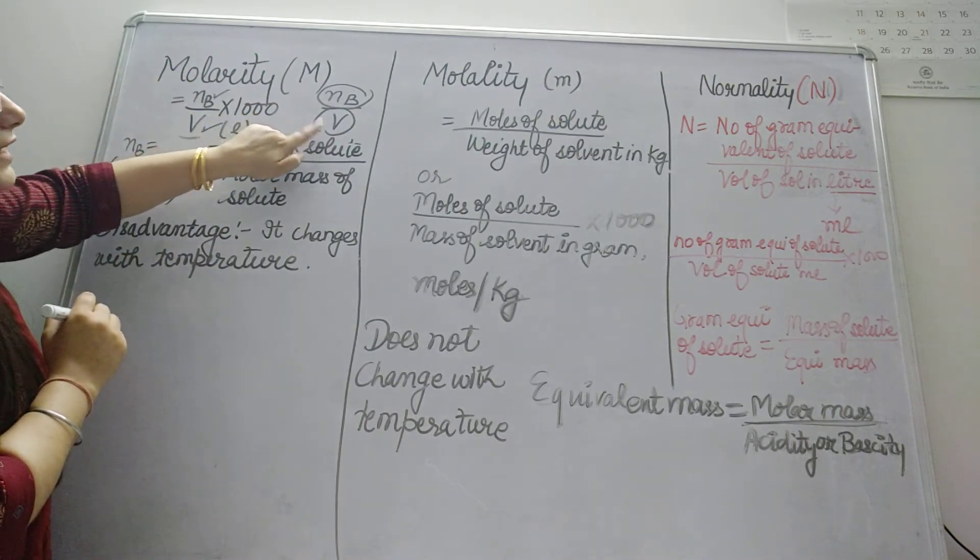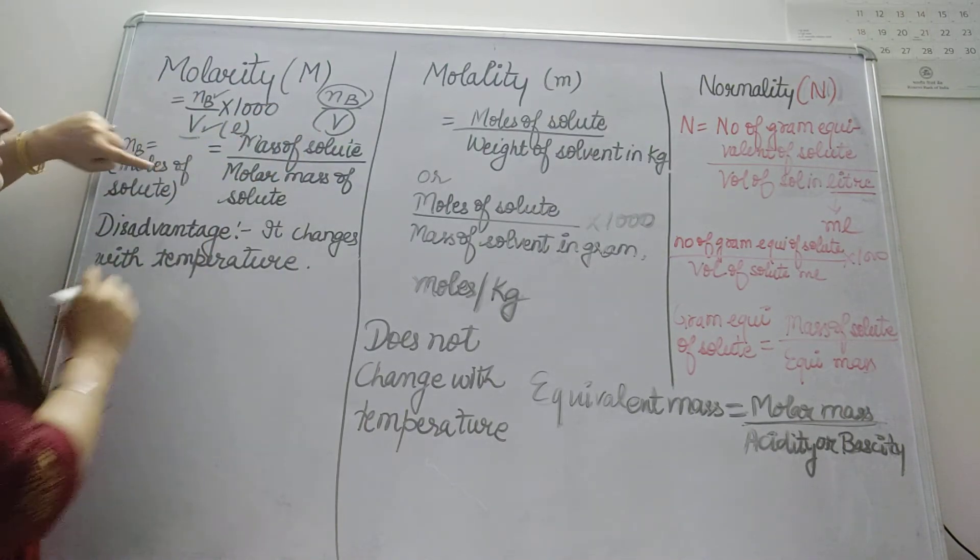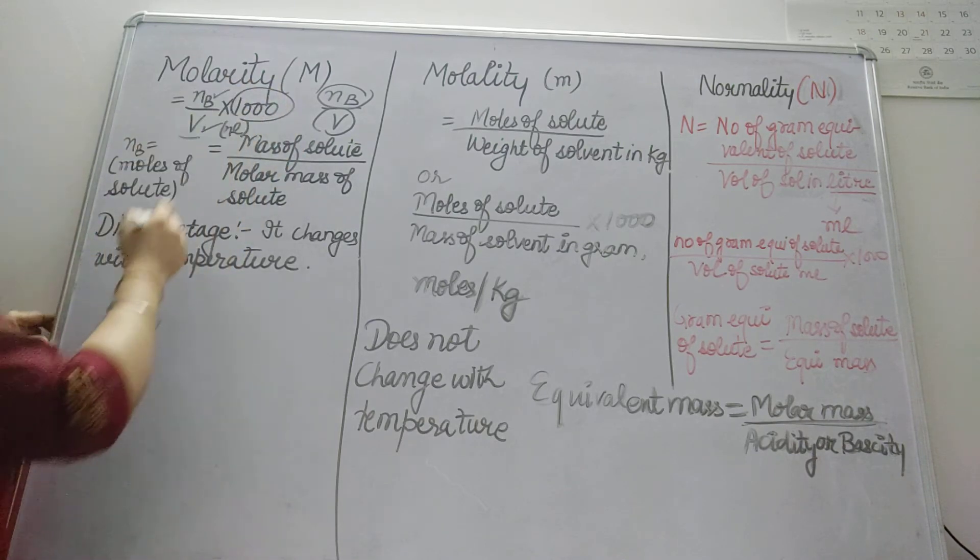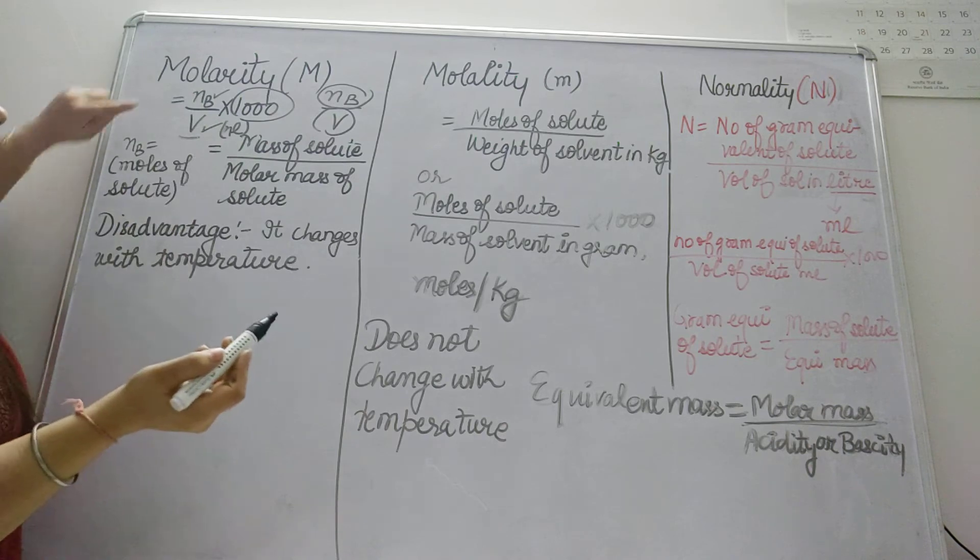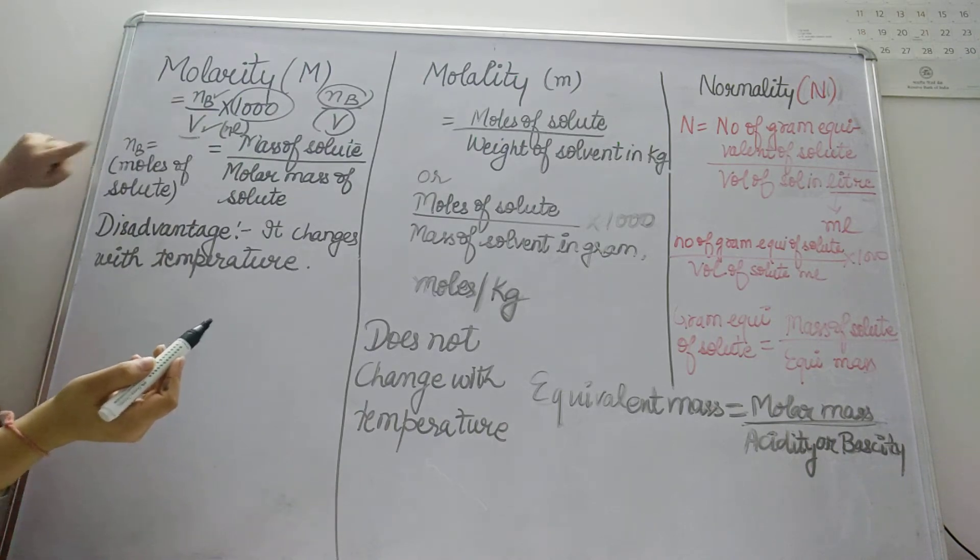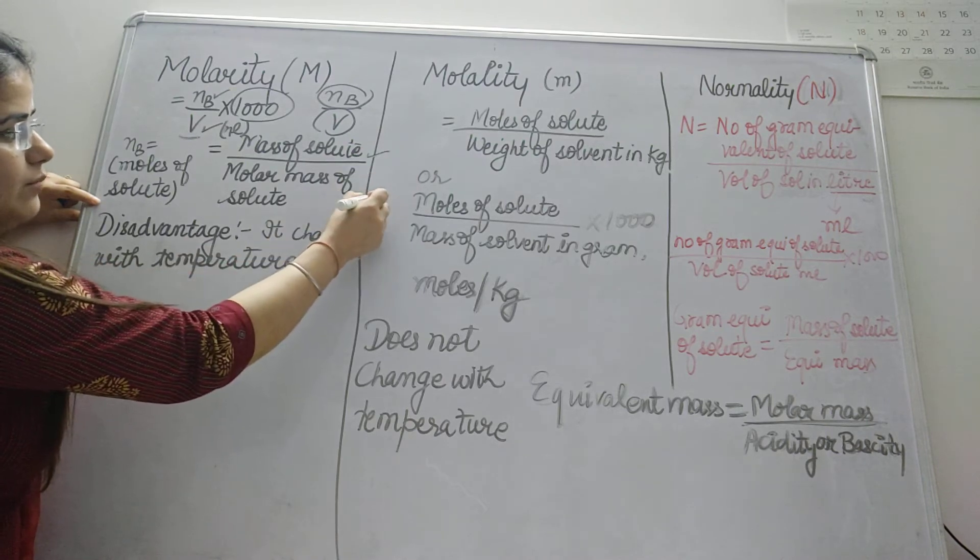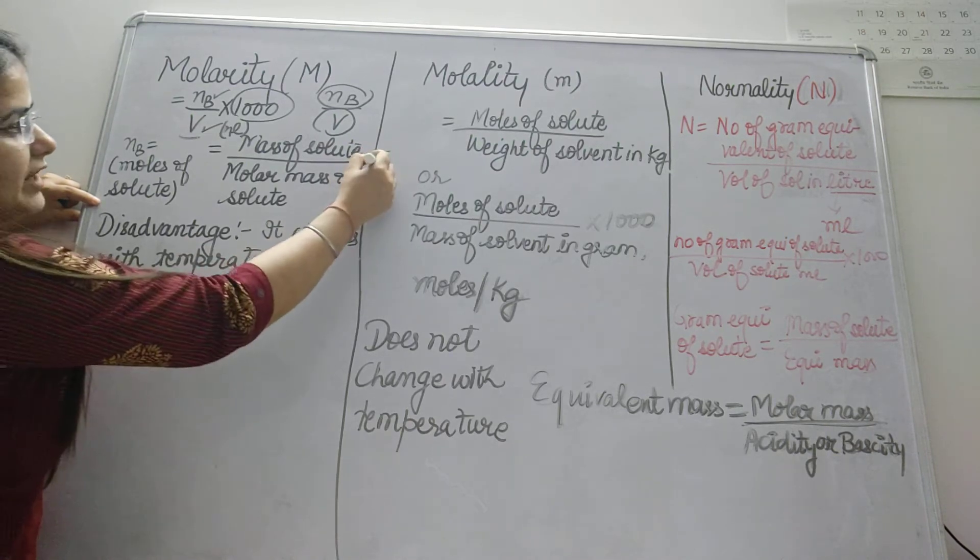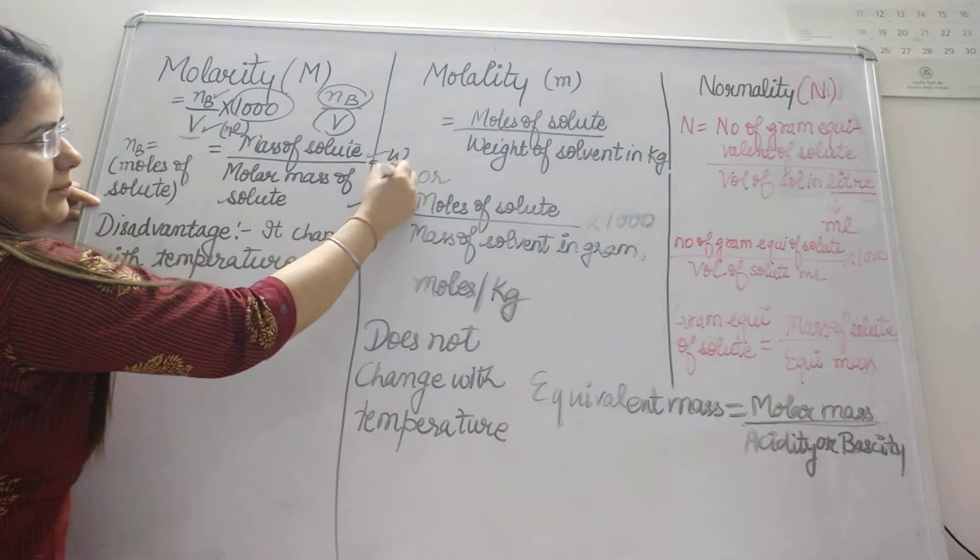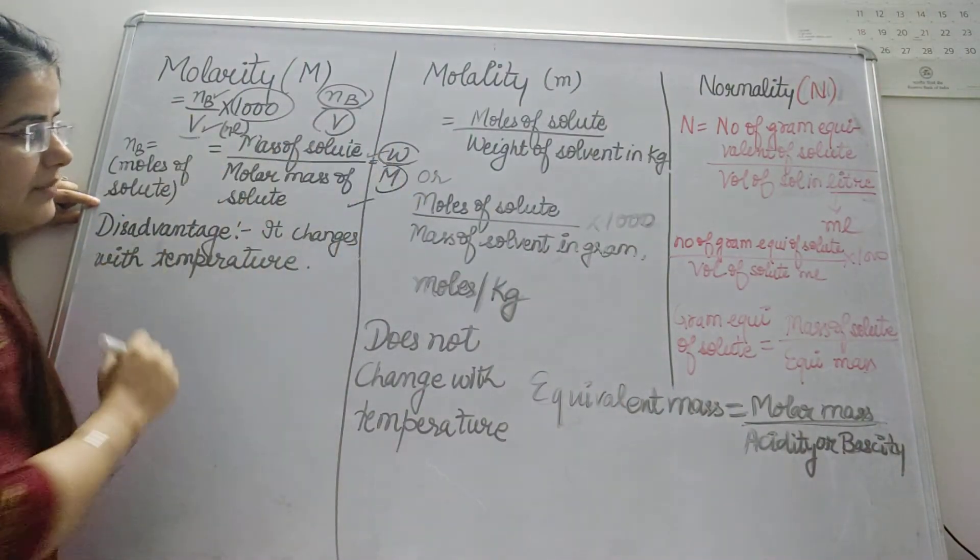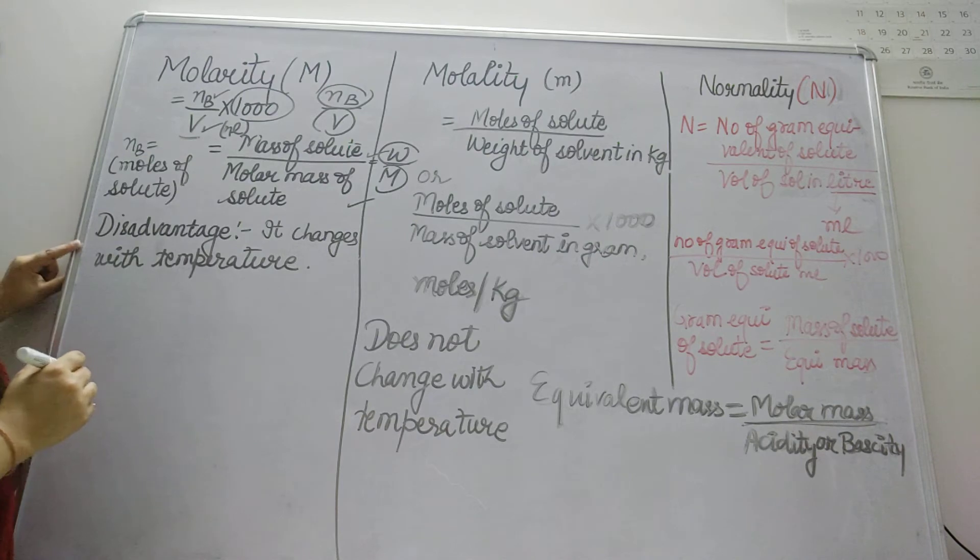But if it is not given in liters, if it is given in milliliters, then you need to multiply it with 1000. Number of moles equals mass of solute divided by molar mass of solute. You can represent it as W upon M, where W is given mass of solute and capital M is molar mass of solute.